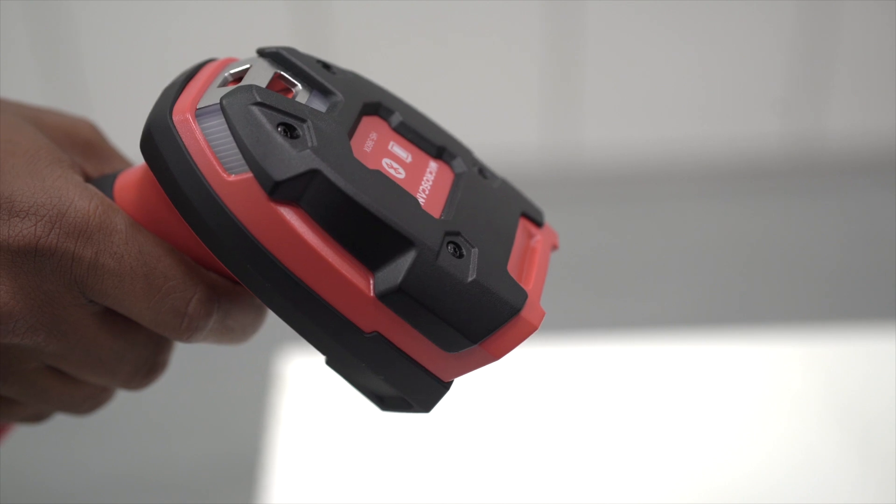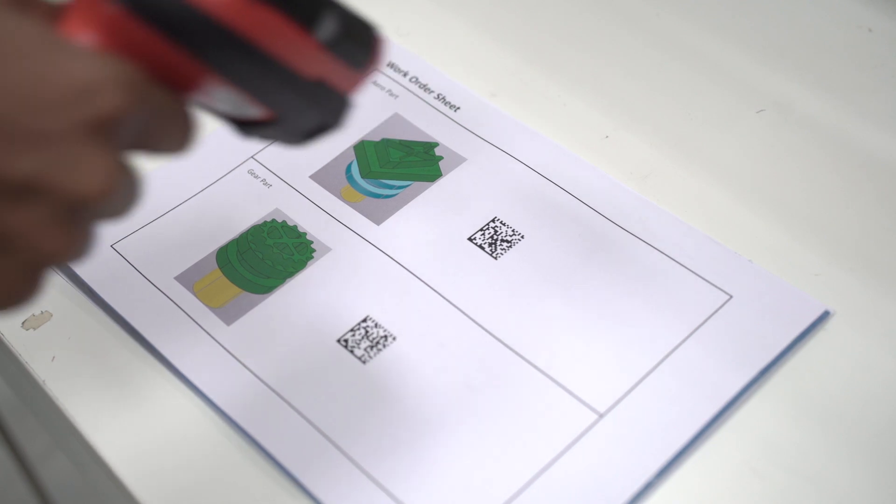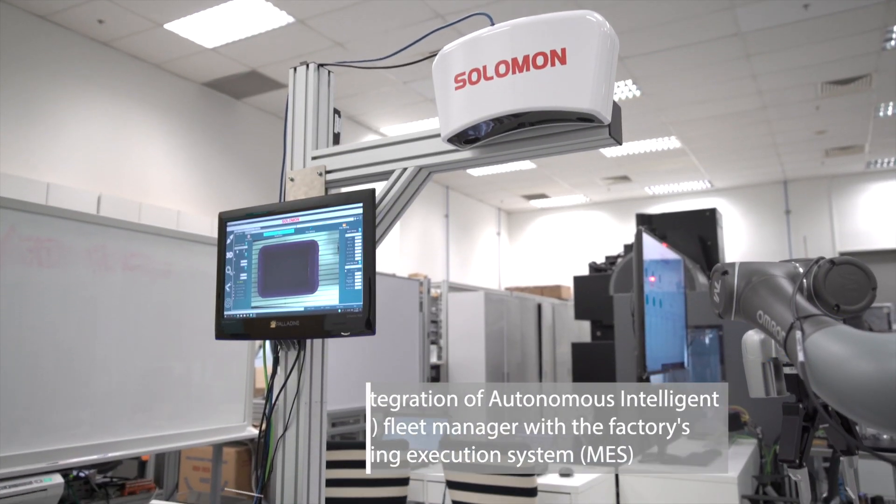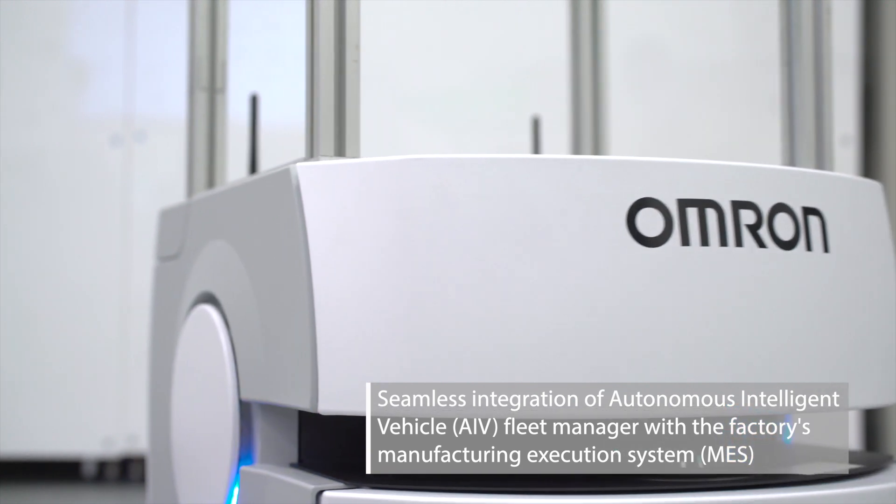At the start, the operator uses an HS series handheld scanner to select the object to be manufactured. This ID is sent to the MES, which notifies the 3D bin picking station and the fleet manager.